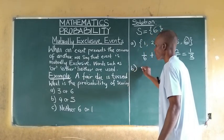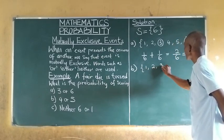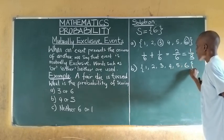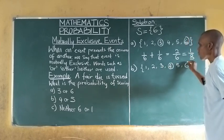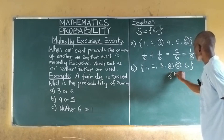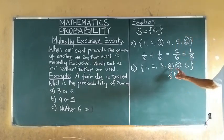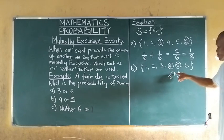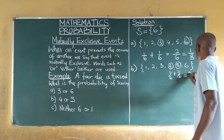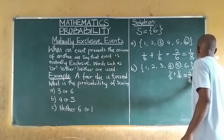(B): What is the probability of scoring four or five? If we throw a die, the possible outcome is either one, two, three, four, five, or six. The probability of scoring four is one over six, plus the probability of scoring five is one over six. So the probability of scoring either four or five is one over six plus one over six, which equals two over six, which is one over three.